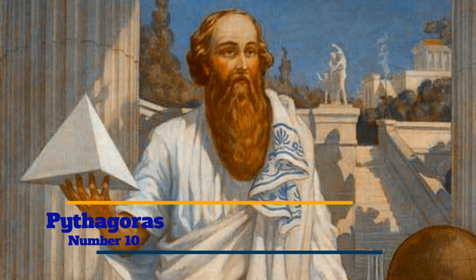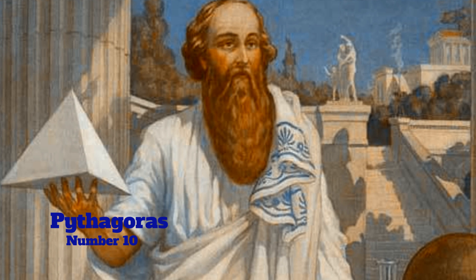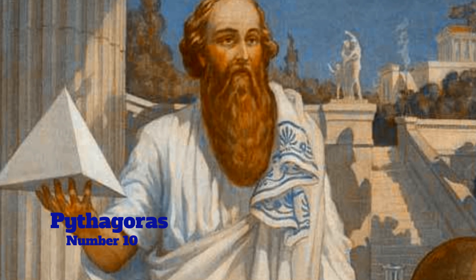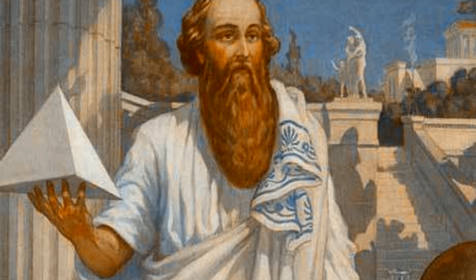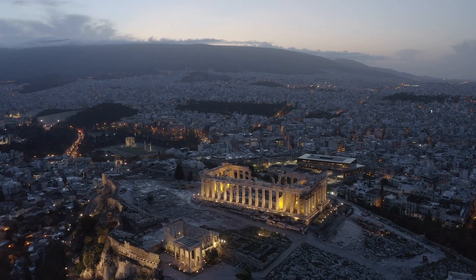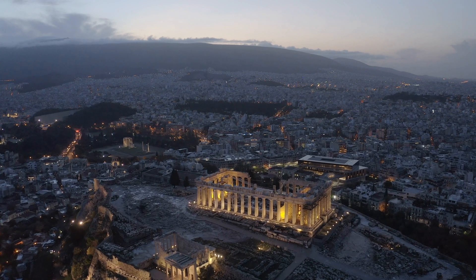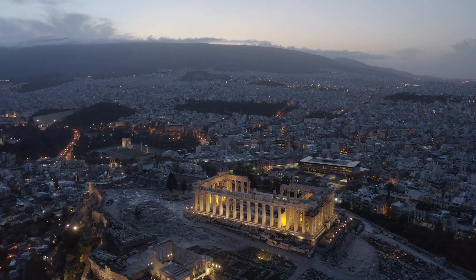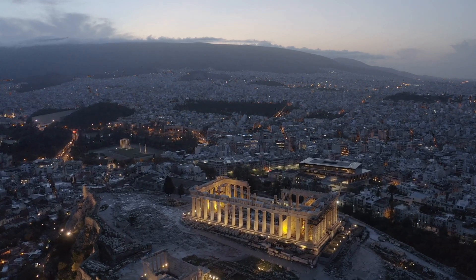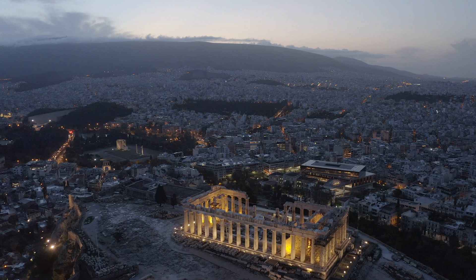Number 10: Pythagoras. Pythagoras of Samos was an ancient Ionian Greek philosopher. In antiquity, Pythagoras was credited with many mathematical and scientific discoveries.